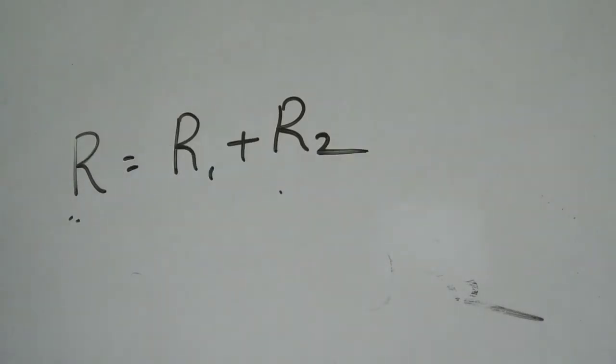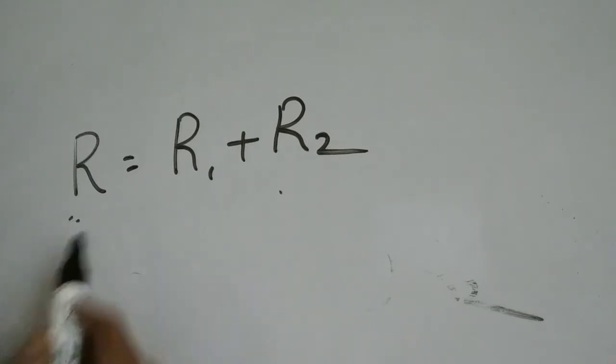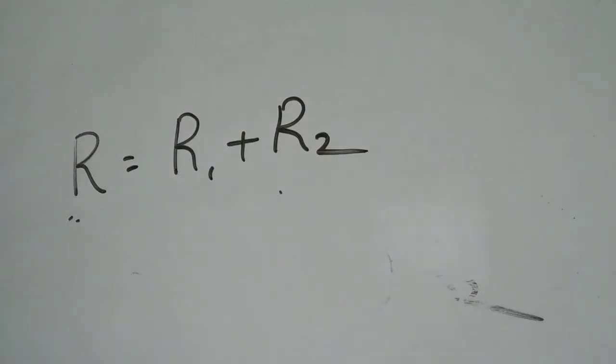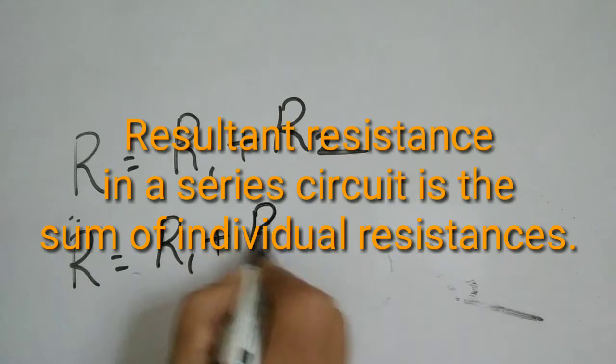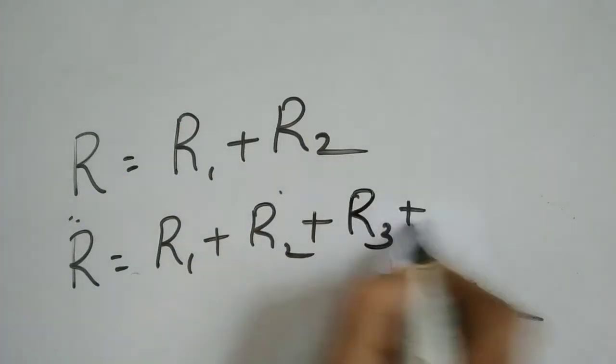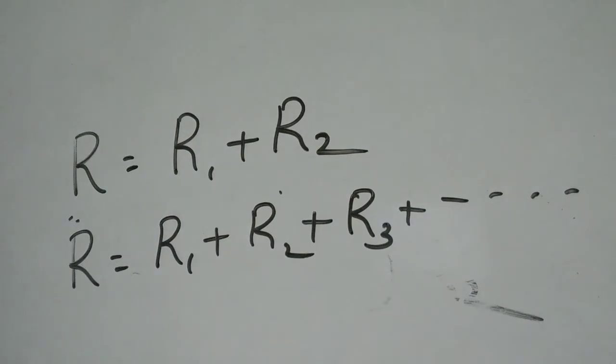That is, net resistance or resultant resistance is equal to the sum of the individual resistances, measured in ohms. So if two or more resistors are there, you can write R = R1 + R2 + R3 and so on. This is how we can find the net resistance in a series circuit. Net resistance means the effect formed by a single resistor when all the other resistors are replaced.